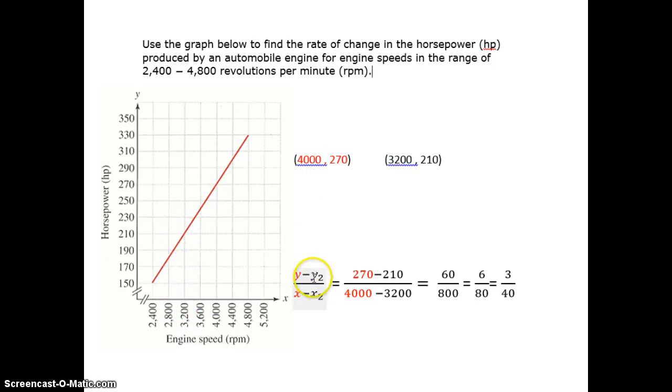Plug those points into the formula for slope, where you subtract the Y's on top and the X's on bottom, and make sure you start with the same point each time. So I'm going to start with this point's Y value, 270, and subtract 210, this Y value, and I need to make sure I start with the same point's X value on bottom, so 4,000 minus 3,200.